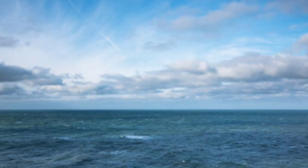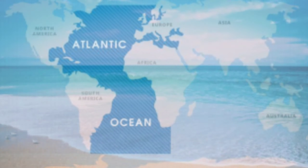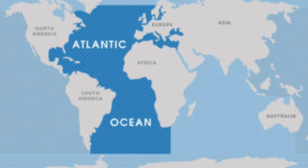The Atlantic Ocean is the second largest ocean of the world. It is in the shape of the letter S. It is almost half the size of the Pacific Ocean. It separates Europe and Africa from North and South America.